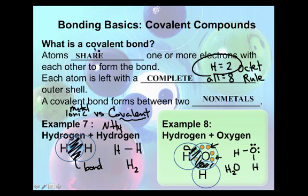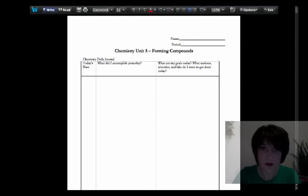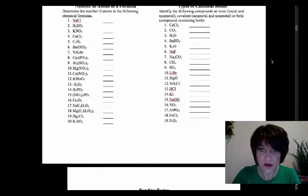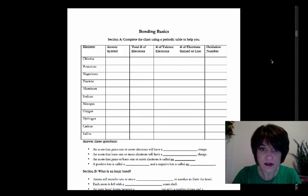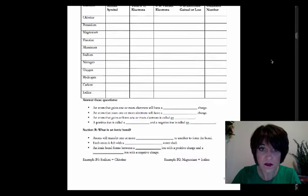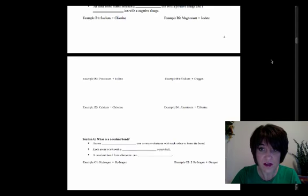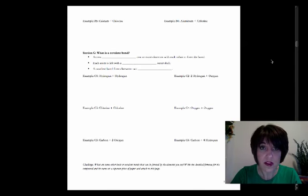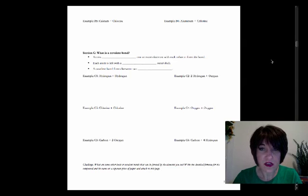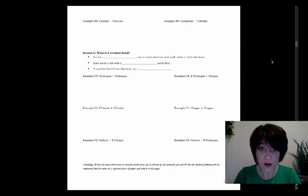This comes from bonding basics. In your unit five packet, scroll down to page four where it says bonding basics. We've already completed section A and section B about ionic bonds, so continue on to page five, section C, which covers covalent bonds. We've filled in the first three blanks about how bonds form, and did examples C1 and C2: hydrogen with hydrogen, and hydrogen with oxygen. Push pause now if you need to and go back to fill in those notes. We're going to finish up by doing the rest of those examples.